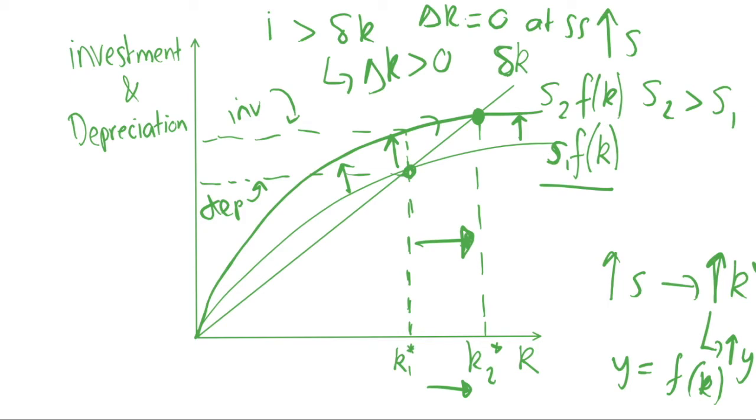So pretty simple really. Increase the savings rate, you increase investment, you increase your steady state level of capital stock. Thanks for watching. That is what happens if we change the savings rate in the Solow model.